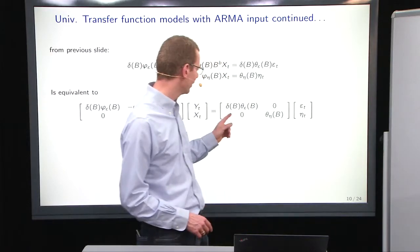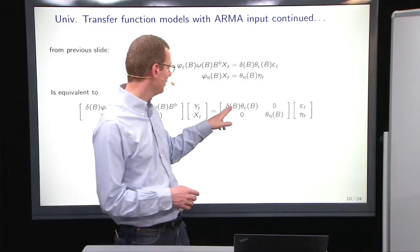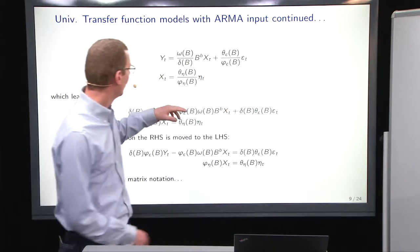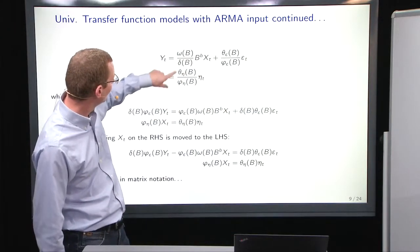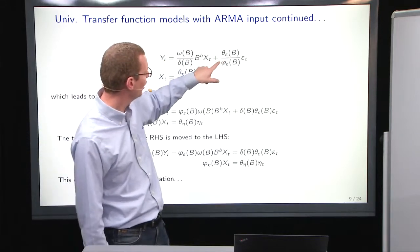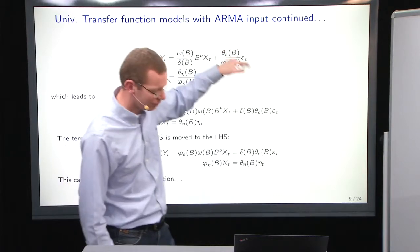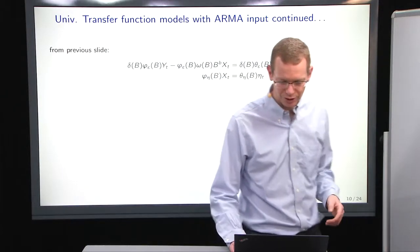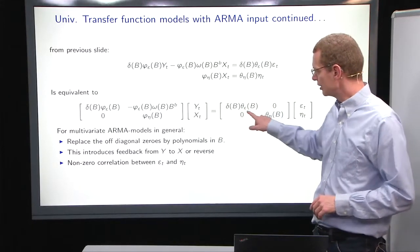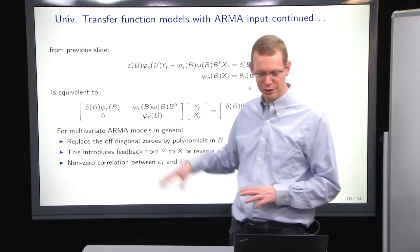Notice that these coefficients that you have here, you have multiplied what came from that delta there. So all of a sudden, the structure from the system is moved over and added to the noise representation here. Likewise, part of the noise representation has been moved to the autoregressive part here.